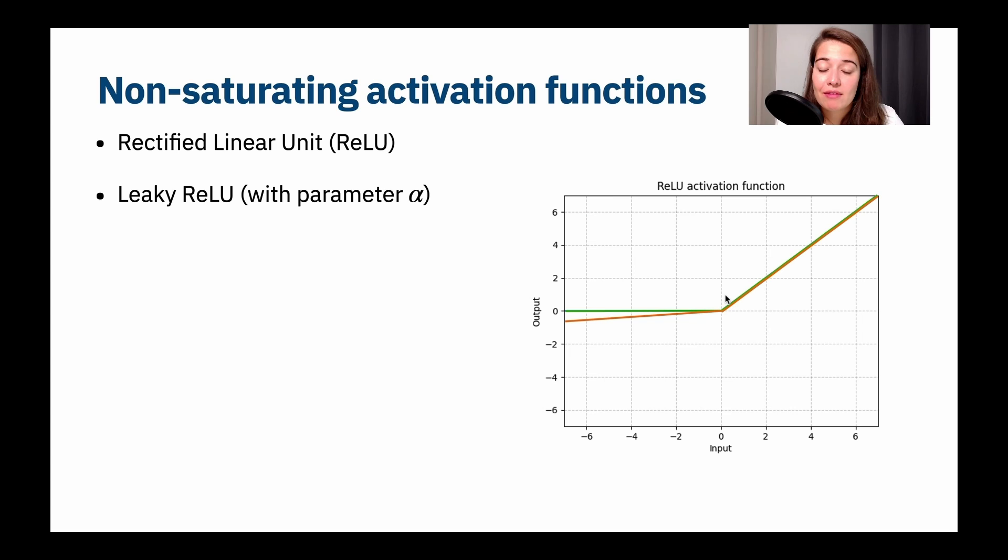For example, you have Leaky ReLU. Leaky ReLU is the same, it's linear in the positive inputs. But for negative inputs, it has some sort of slope here. And this slope is dependent on the parameter alpha. So you can make the slope very strict and linear, or you can make the slope a bit more gentle and going more slowly.